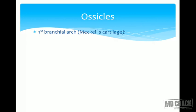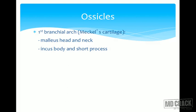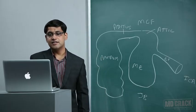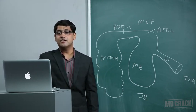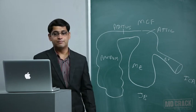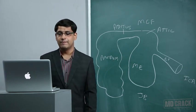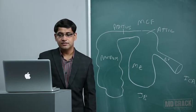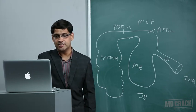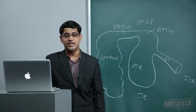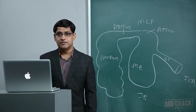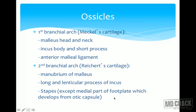There are three ossicles: malleus, incus, and stapes - the stapes being the smallest bone in the body. From the first branchial arch (Meckel's cartilage): malleus head and neck, incus body and short process, and anterior malleolar ligament. From the second branchial arch (Reichert's cartilage): the manubrium of malleus, long and lenticular process of incus, and the stapes. However, the medial part of the footplate of the stapes develops from the otic capsule, not from the second branchial arch.